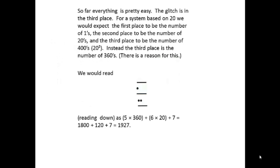The glitch of the system is in the third place. As the system is based on 20, we would expect the first place to be the number of ones, second place to be the number of 20s, the third place to be the number of 20 squareds. It's not, and there's a reason for this, but the third place is the number of 360s.